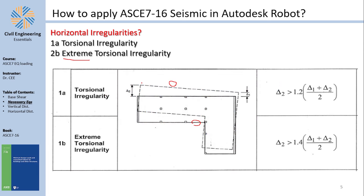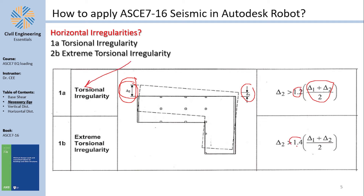Illustrated with a picture: one side of the structure drifts at δ1 and the other at δ2. The average drift = (δ1 + δ2) / 2. If the maximum drift exceeds 1.2 times that average, you have torsional irregularity. If it exceeds 1.4 times the average, you have extreme torsional irregularity.